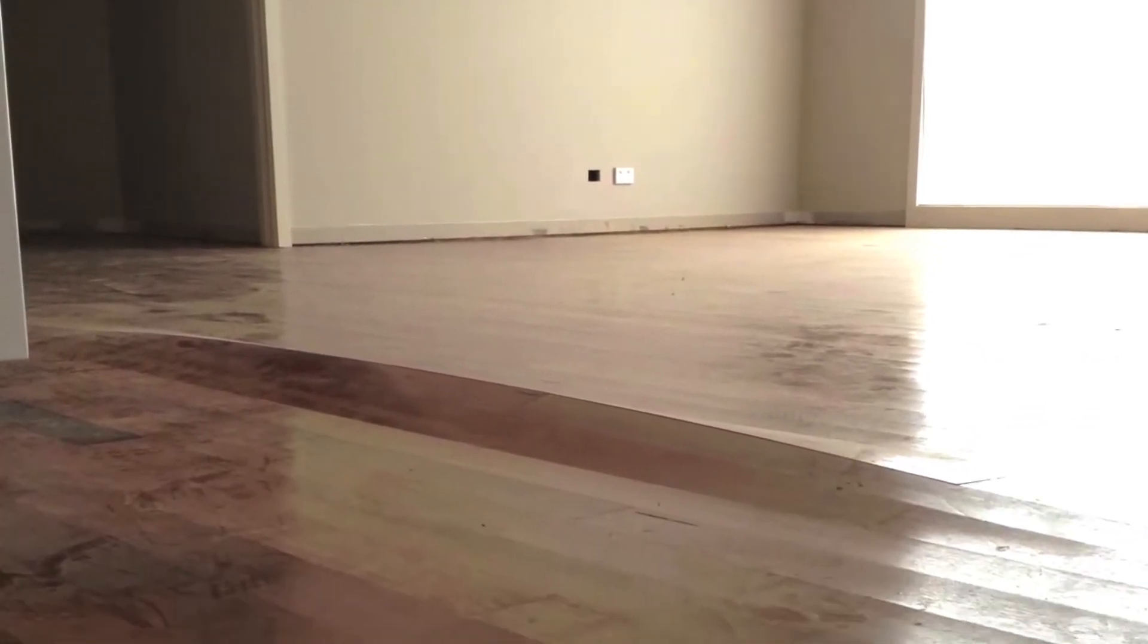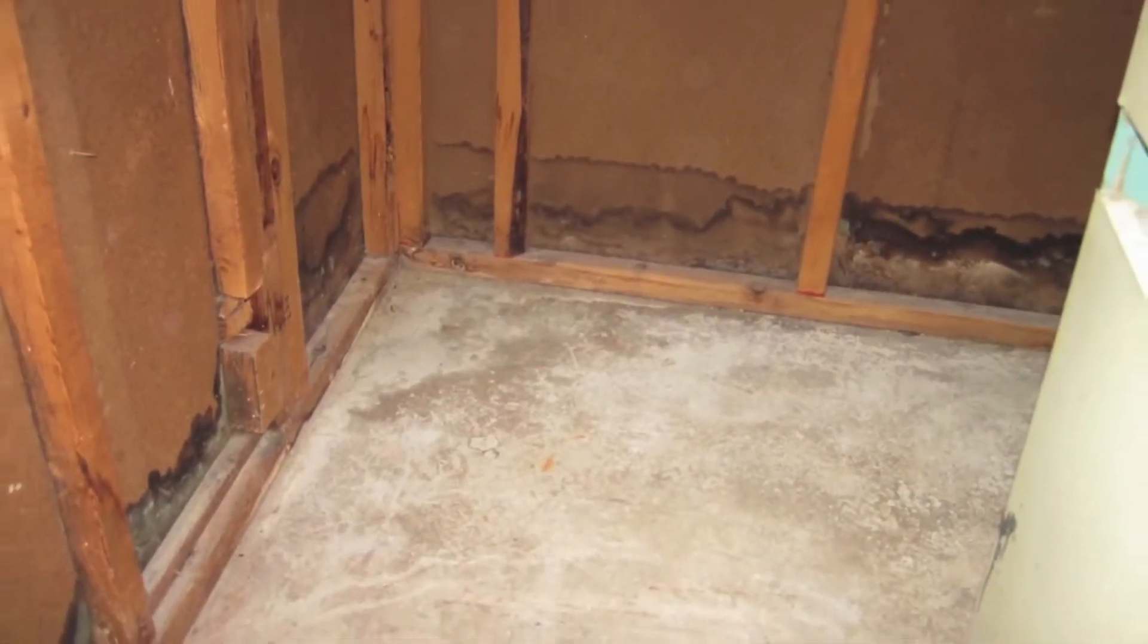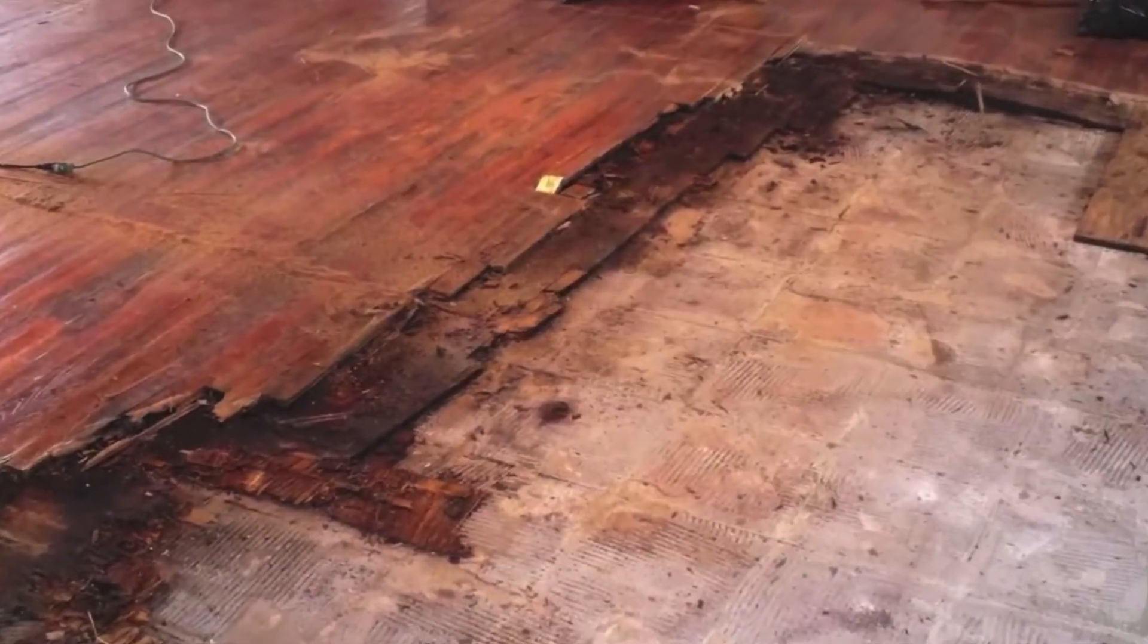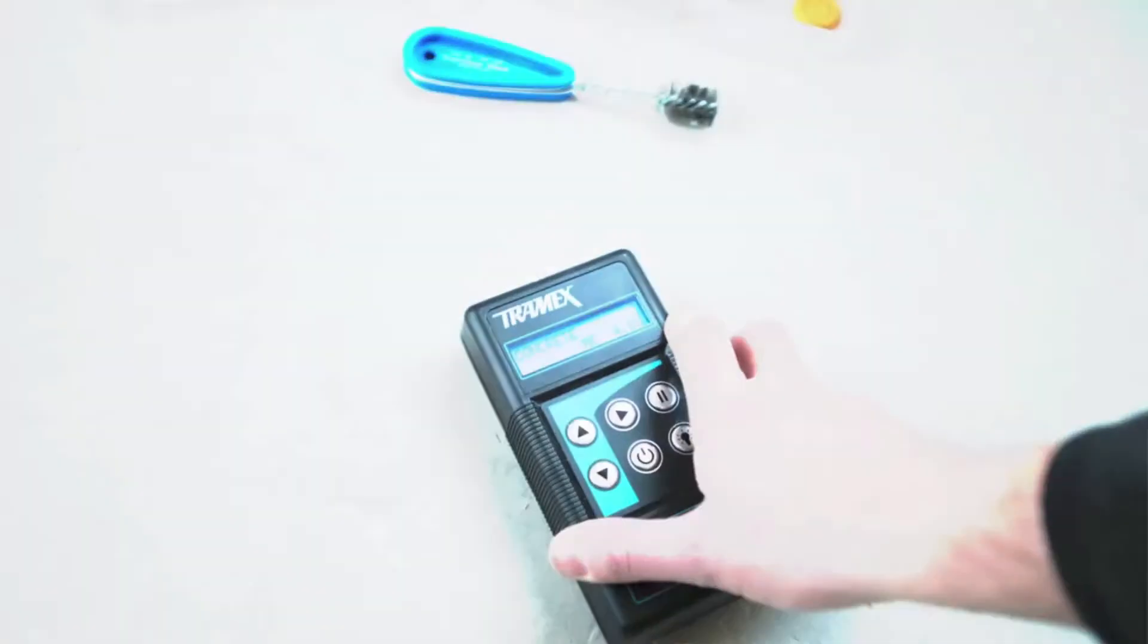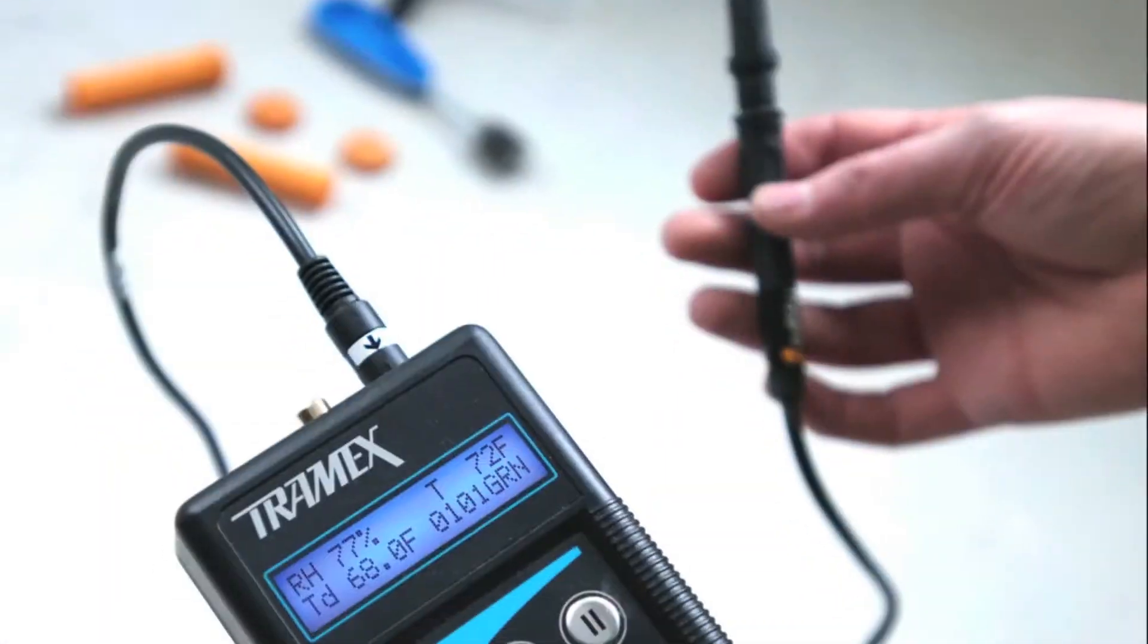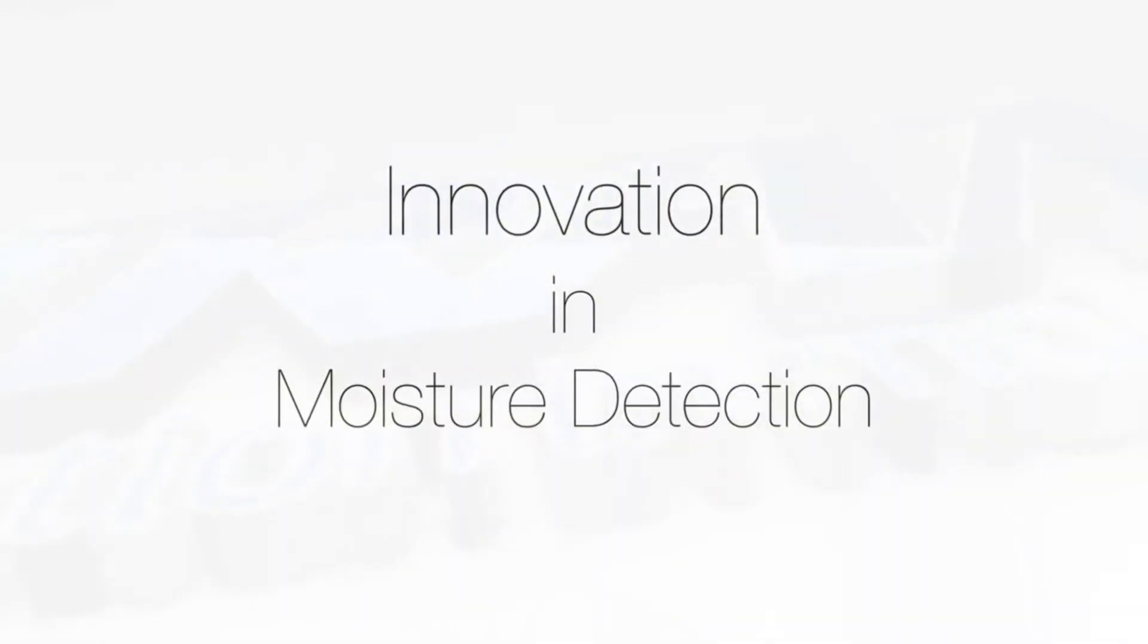Excessive moisture in concrete floor slabs and screeds, or a disequilibrium between moisture content in the building and the flooring materials, can lead to major problems in many types of floor coverings. Why take risks? Test with Tramex. Innovation in moisture detection.